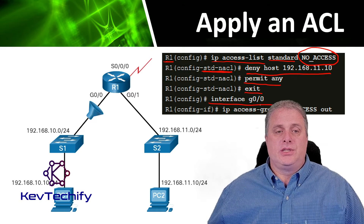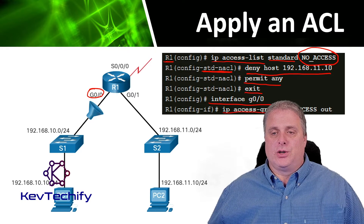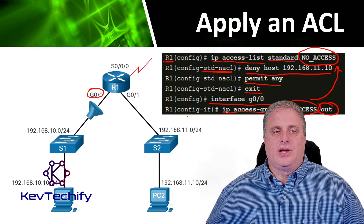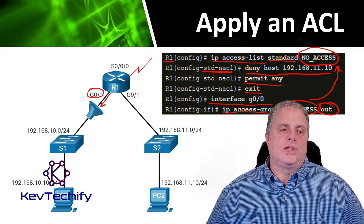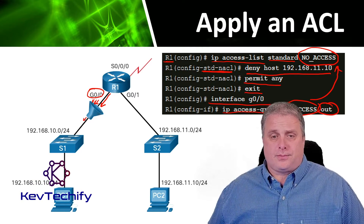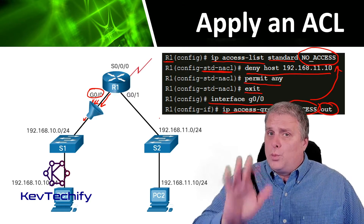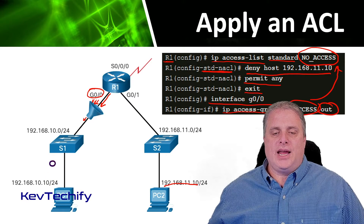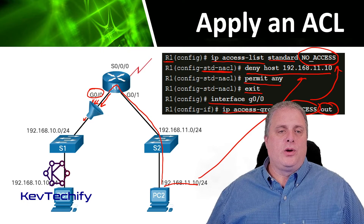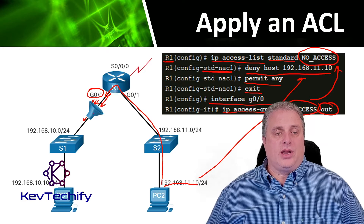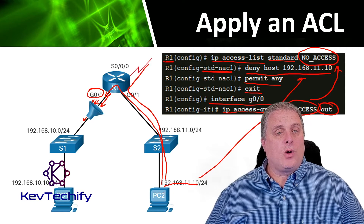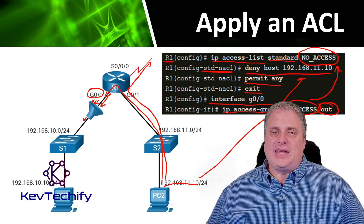Now that we've created it, we have to apply it to the interface. We go into interface G0/0 and we say IP access-group, applying that access list. We specify the name — NO_ACCESS — and apply it to outbound traffic. So any traffic coming out of this router goes into the filter. What's happening here is PC2, at 192.168.11.10, will have any traffic from it denied when it goes out this interface — it won't reach the rest of the network. But PC2 can still send traffic out the serial connection, which works fine. That's why thinking about inbound versus outbound traffic matters.